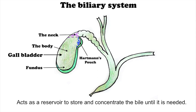The gallbladder is divided into three sections: the fundus, body, and neck. The fundus is the rounded distal portion of the gallbladder. Medial to the fundus is the largest part of the gallbladder, the body.